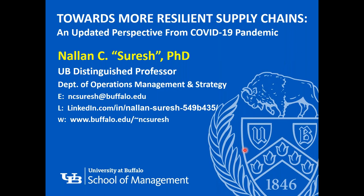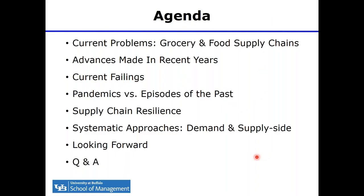So this is the agenda. First we'll take a quick look at the current problems of grocery and food supply chains. Then we will look at some of the advances made in grocery and food supply chains during the last 20 to 30 years. Thanks to the coronavirus, lots of weaknesses in the current system have been exposed. We'll summarize the current failings and the differences between this pandemic event and other episodes we have faced in the past. Based on that, we will come to some general principles about what we can do to make supply chains more resilient and offer some perspectives for the future.